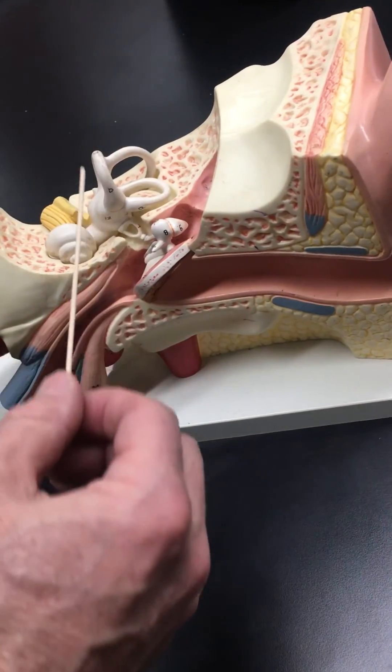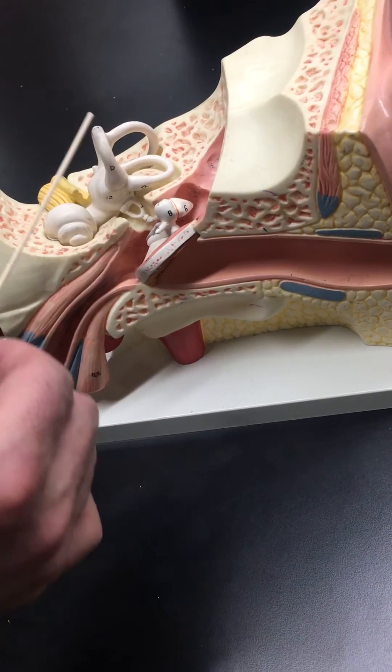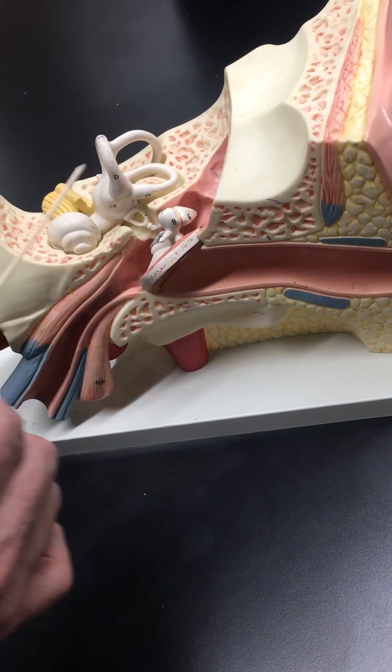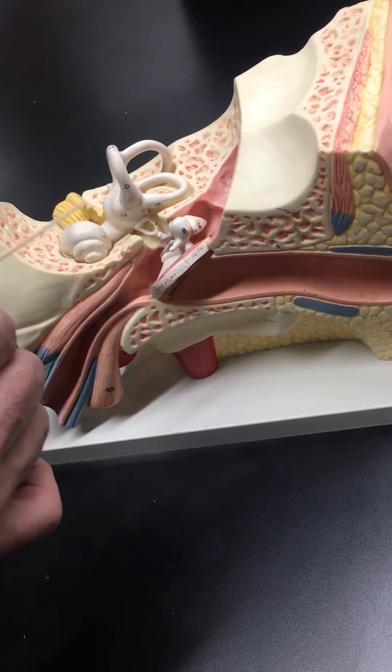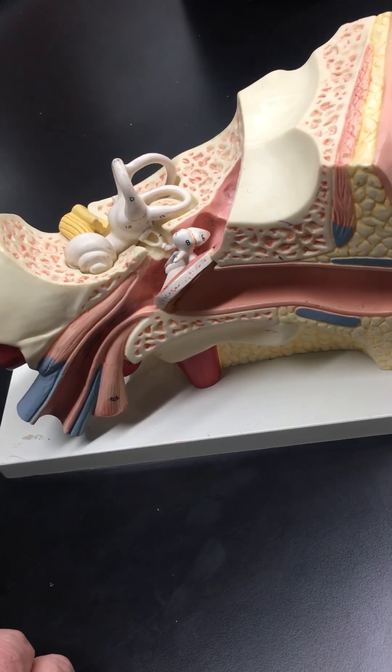Semicircular canals are for balance and equilibrium. So as you move your head, the fluid and the small stones within it move around, stimulating the endings of the nerve - the vestibular portion of the vestibulocochlear - sending it to the brain for processing.